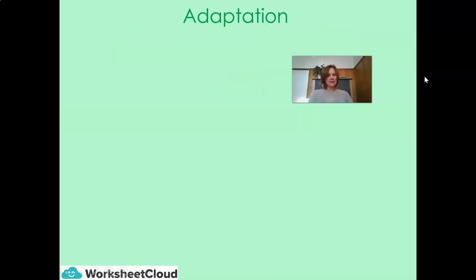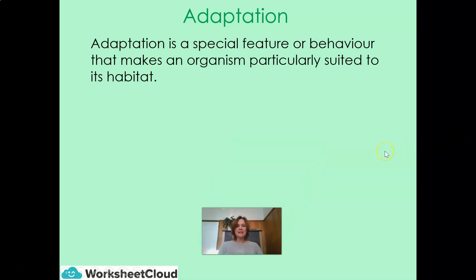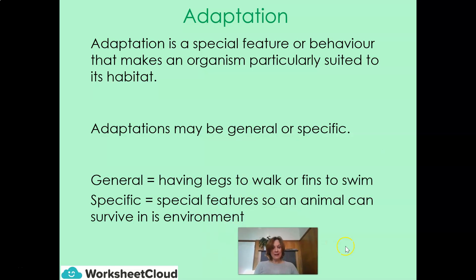First of all, let's ask ourselves: what is an adaptation? An adaptation is a special feature or behavior that makes an organism particularly suited to its habitat. The adaptations may be general or specific. When we speak about a general adaptation, it's about having legs to walk or fins to swim — something general. However, something specific means the special features so an animal can survive in its environment. We're going to take an in-depth look at the difference between general and specific adaptations.